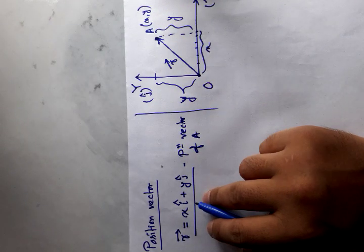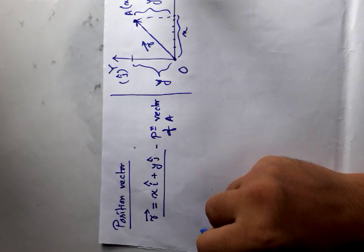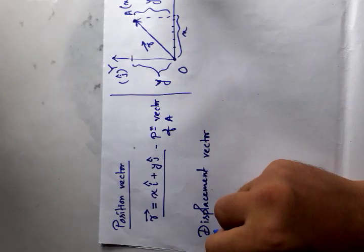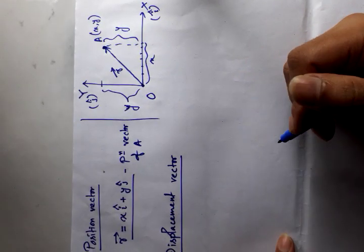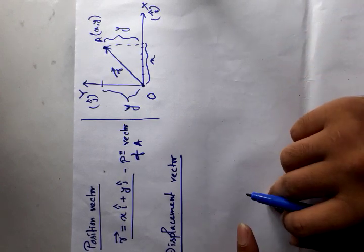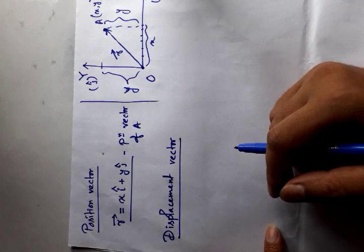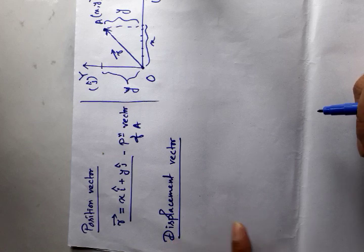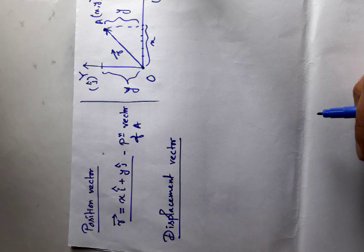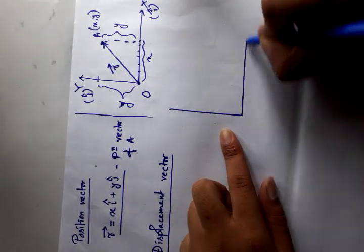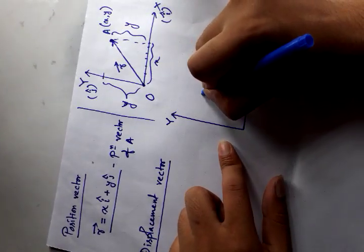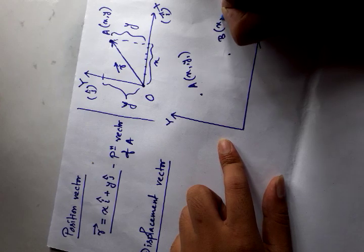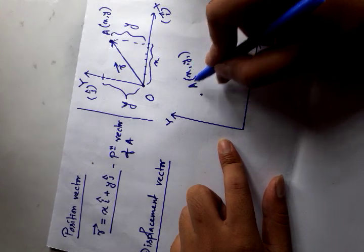Next, I have a position vector. Consider a coordinate system. Suppose a body is in motion. Consider its position. To define a point in a coordinate system we use coordinates — suppose a point A has coordinates x, y. Its initial position is given by suppose A with coordinates x1, y1 and final position is given by B with coordinates x2, y2.